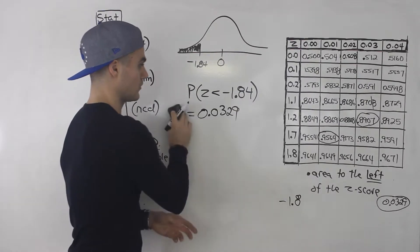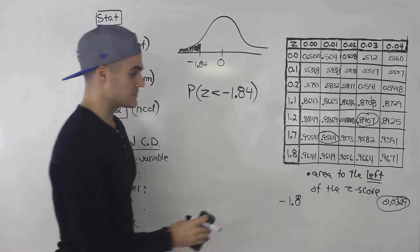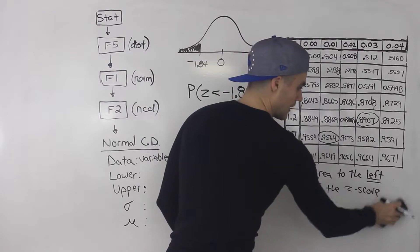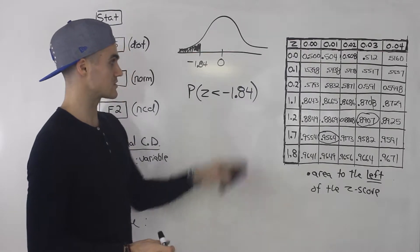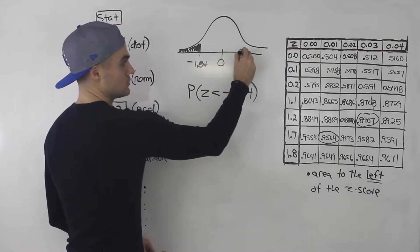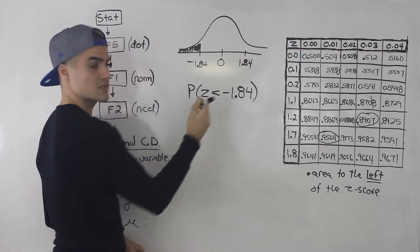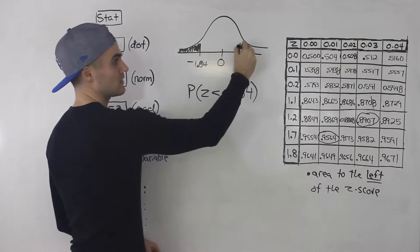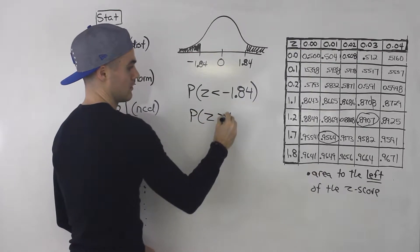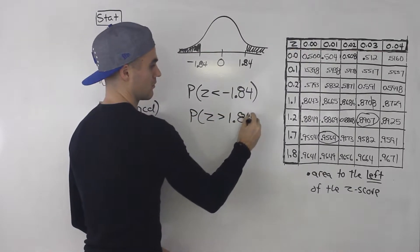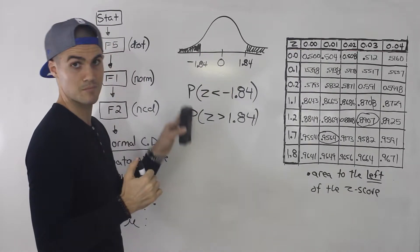However, what if you don't have a negative z-table, or you're not allowed to use one? Then it's more tricky, because you have to find an equivalent expression that uses a positive z-score. Notice that if we use the positive value 1.84 instead: the probability that z is less than negative 1.84 is the same as the probability that z is greater than 1.84. Both give you the exact same area — the exact same probability — because of symmetry.